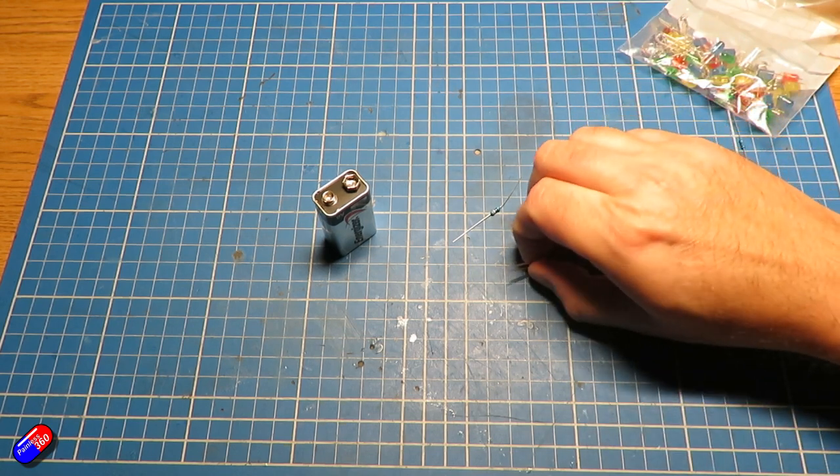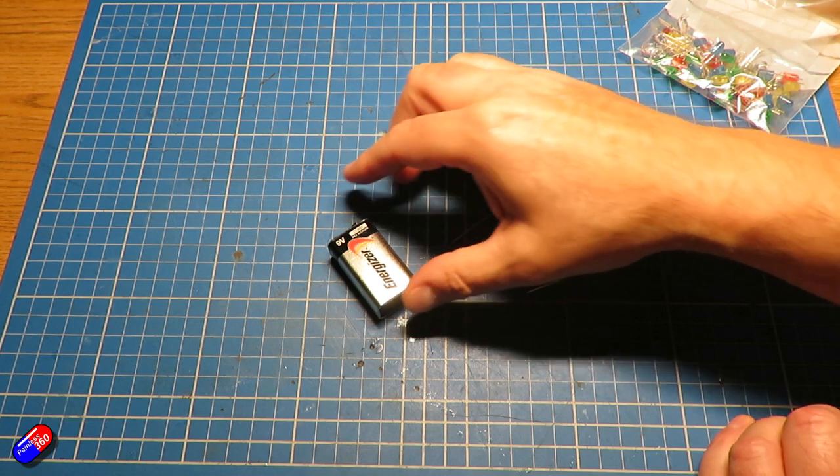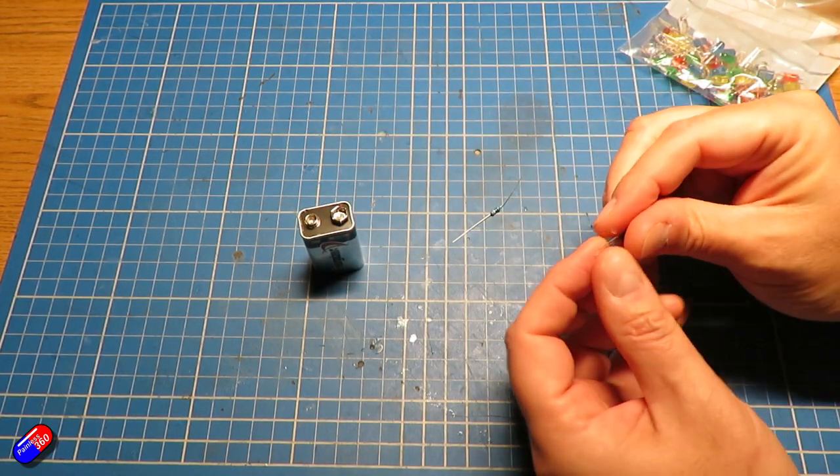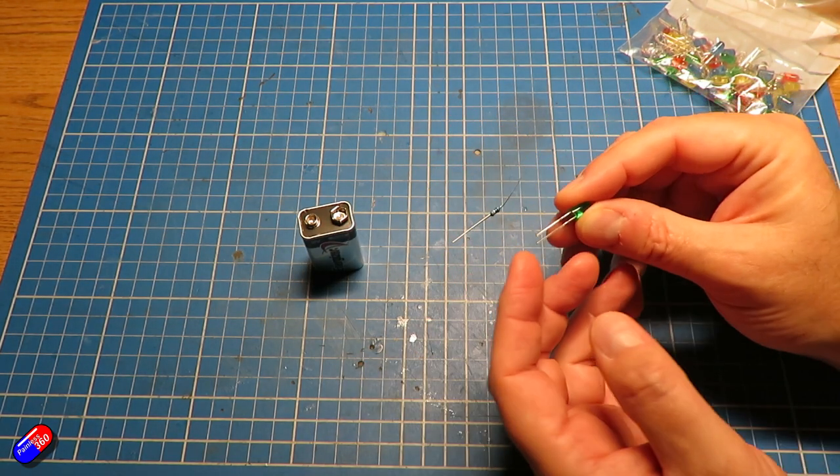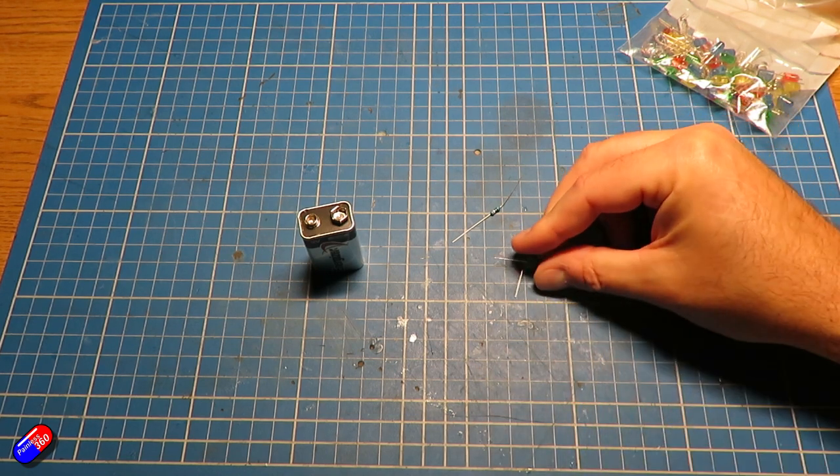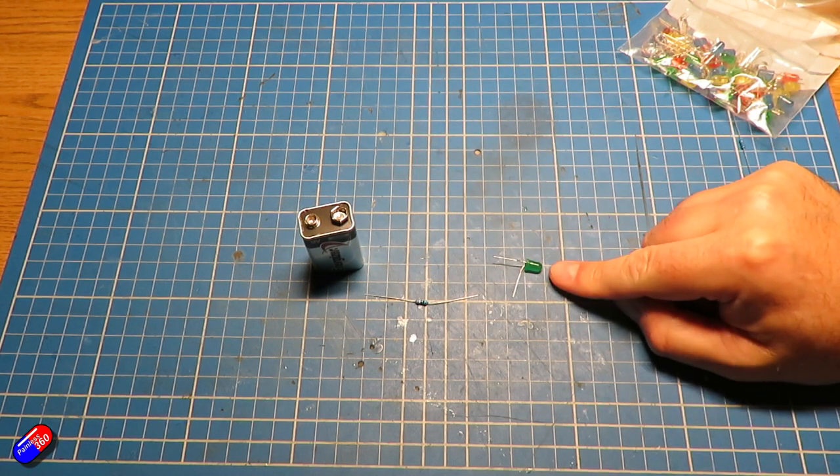So the first thing we'll do, let's light this LED using this nine volt battery. Now again, this nine volt battery has a positive and negative side. We need to make sure that the negative side of the LED, which is the shorter lead, goes on to the negative side of the battery. So I'm just going to bend the positive side out the way. But what value of resistor do we need in order to make this LED light?